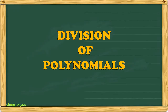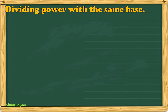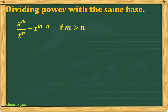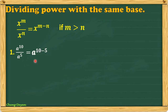Good day everybody. For today's lesson we'll have division of polynomials, but first let us review dividing powers with the same base. Example: x raised to m all over x raised to n equals x raised to m minus n, if m is greater than n. For example, a raised to 10 all over a raised to 5 — subtract the exponents of the numerator and denominator — we'll get a raised to the fifth power.